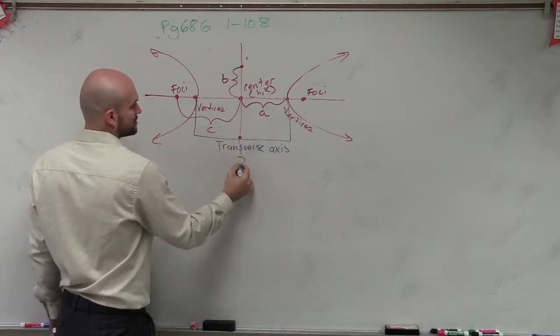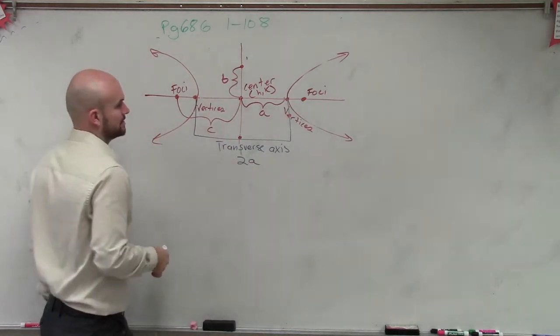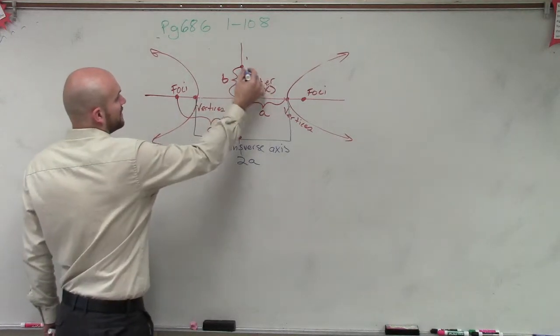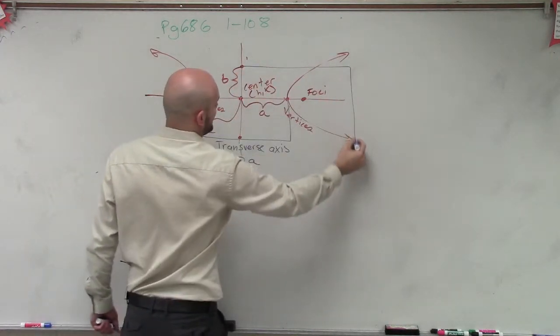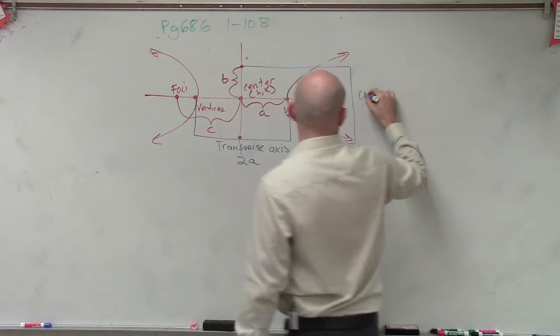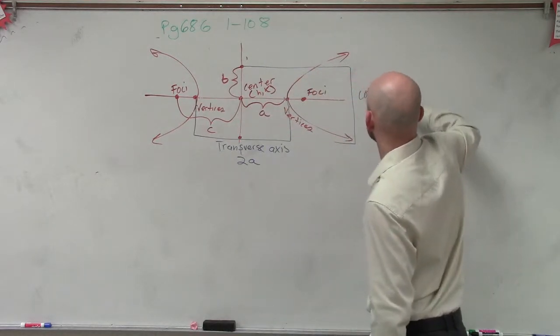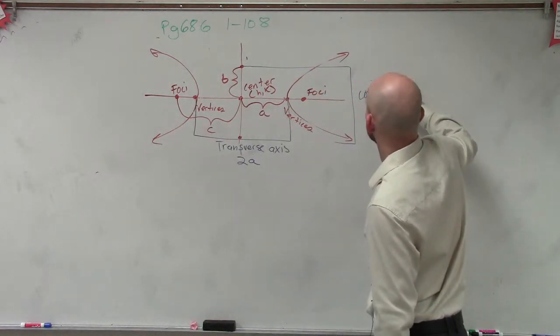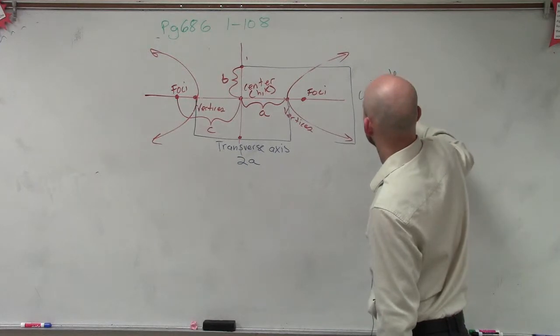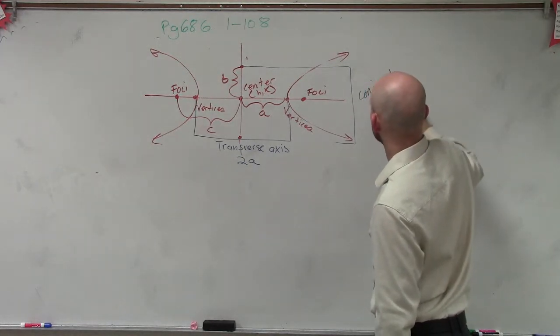It equals 2a, just like the major axis. And then, from our b to b is what we call our conjugate axis, which equals 2b.